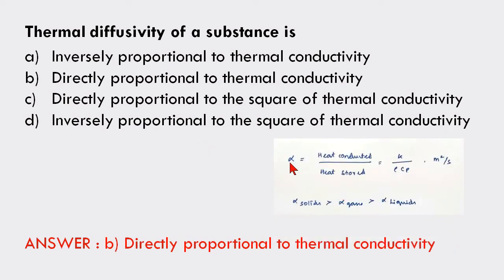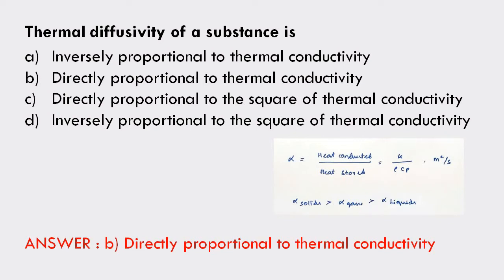Some tips: Thermal diffusivity is the ratio of heat conducted to heat stored, given by K divided by ρCp — where K is thermal conductivity, ρ is density, and Cp is specific heat. The unit is m²/s. The order of thermal diffusivity is solids, then gases, then liquids. If we take thermal conductivity order, it is solids first, then liquids, then insulators, then gases.